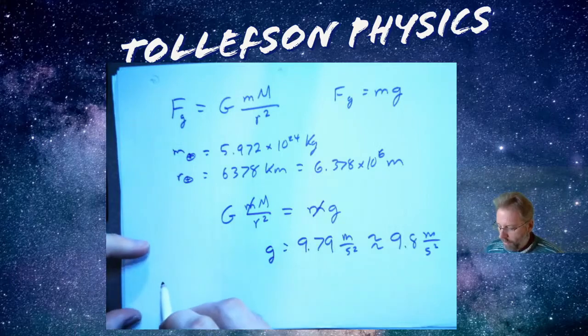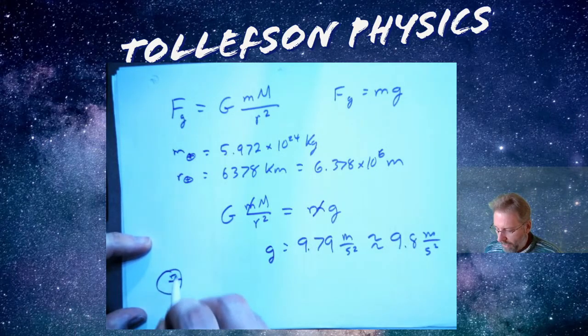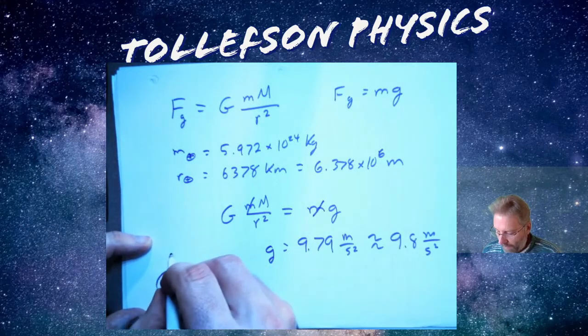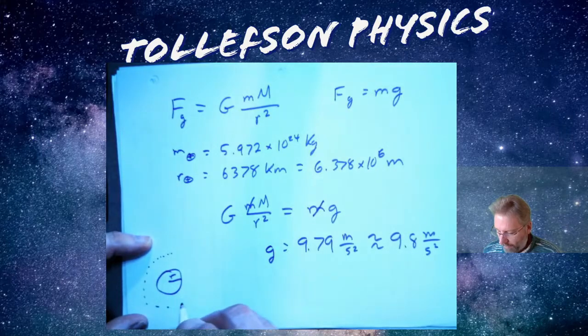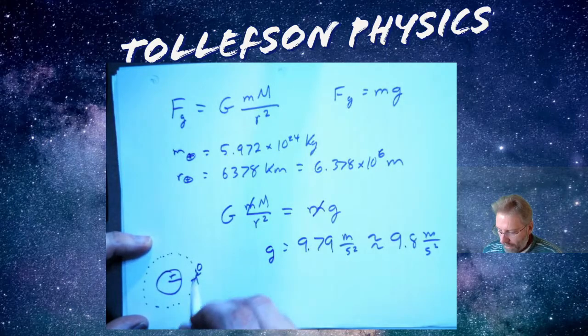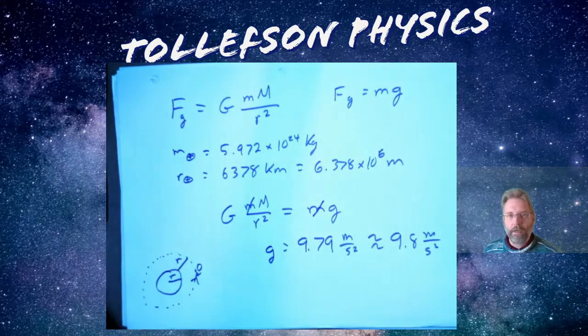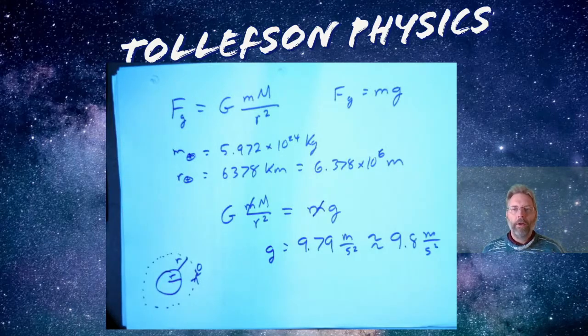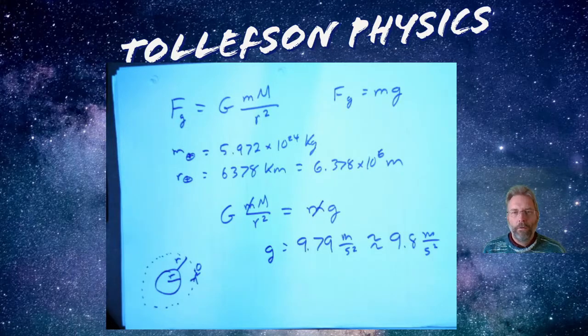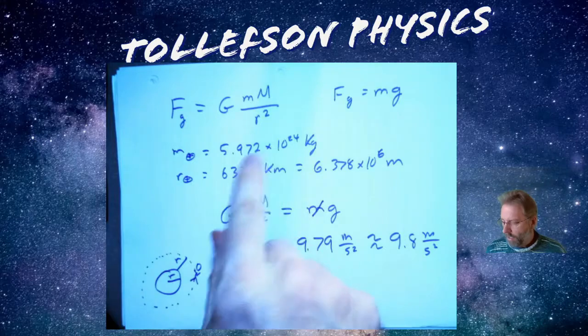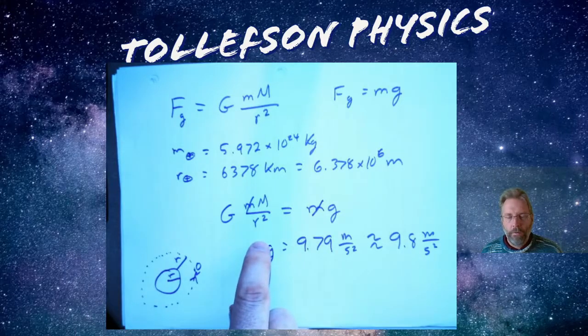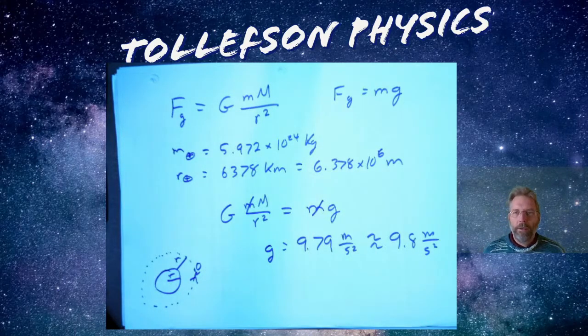There's one more thing I want you to think about. I want you to answer this question right now. We've got the planet Earth with radius r. What happens if I'm on a satellite that's orbiting the Earth, another distance r away from the center of the Earth? I want to know what is the acceleration of Earth's gravity, and I don't want you to recalculate it using all these numbers. I want you to think about what does this tell you?